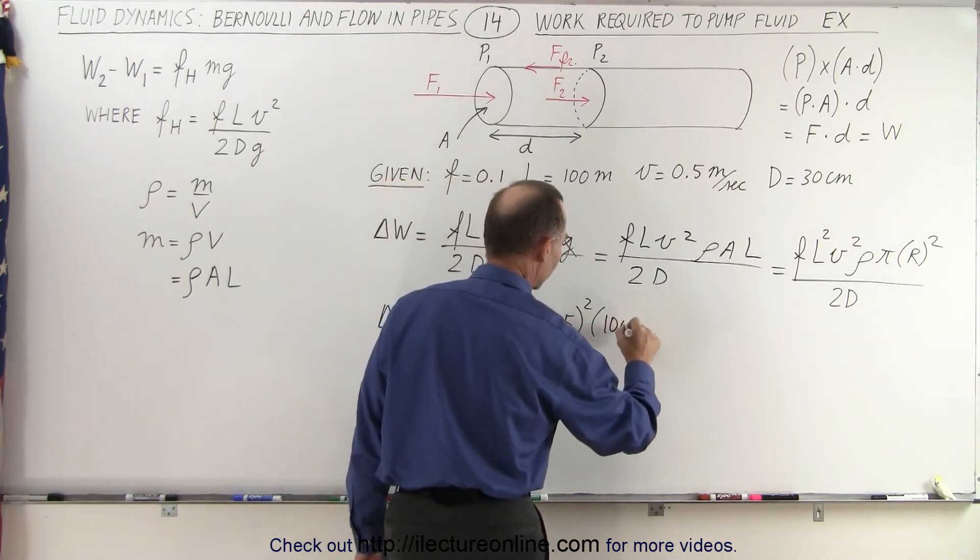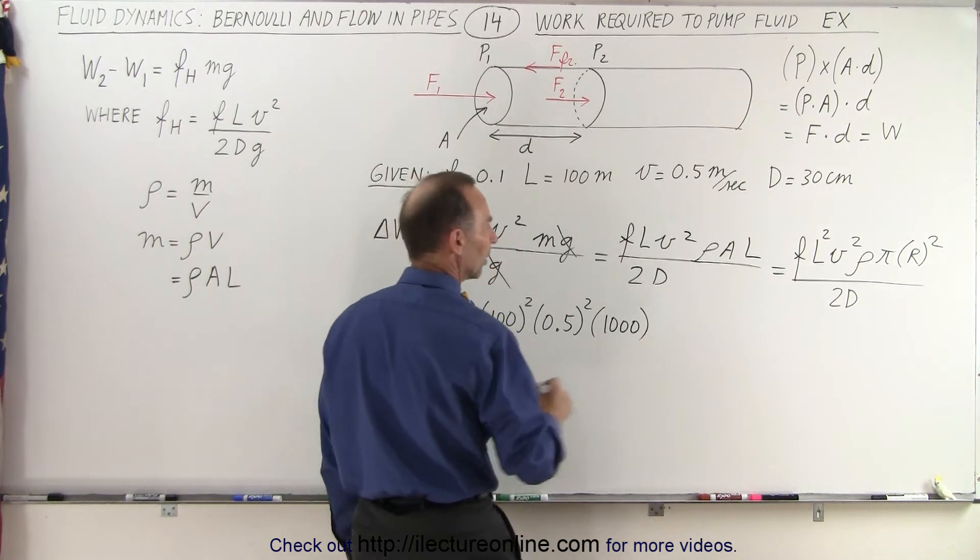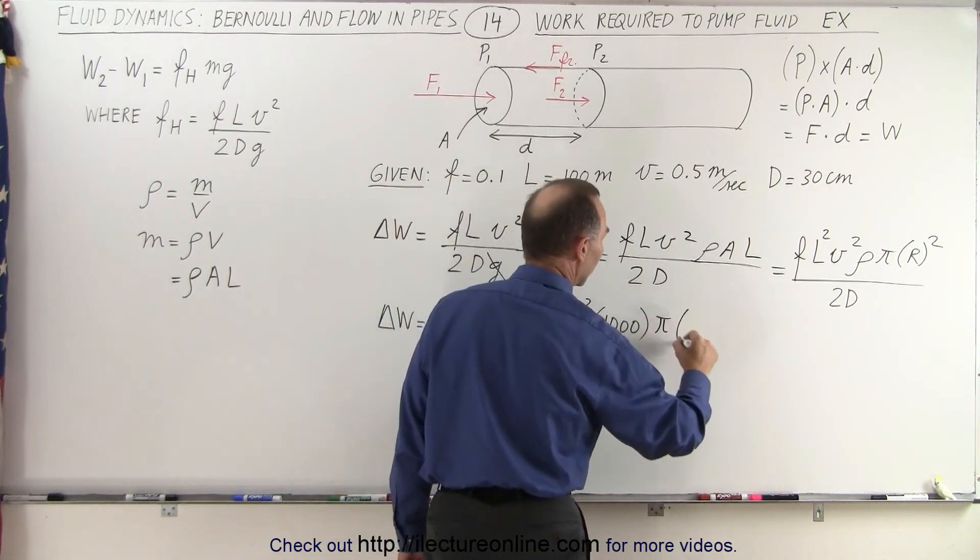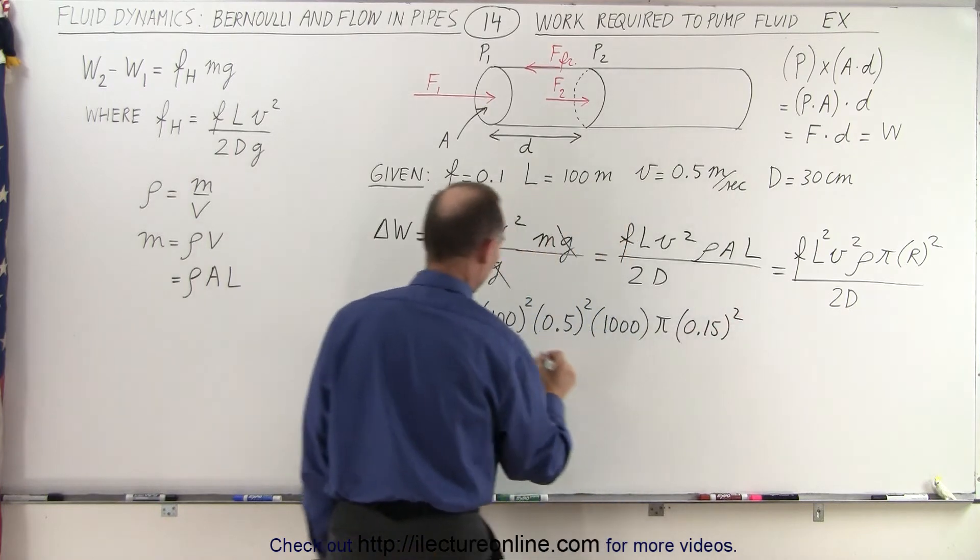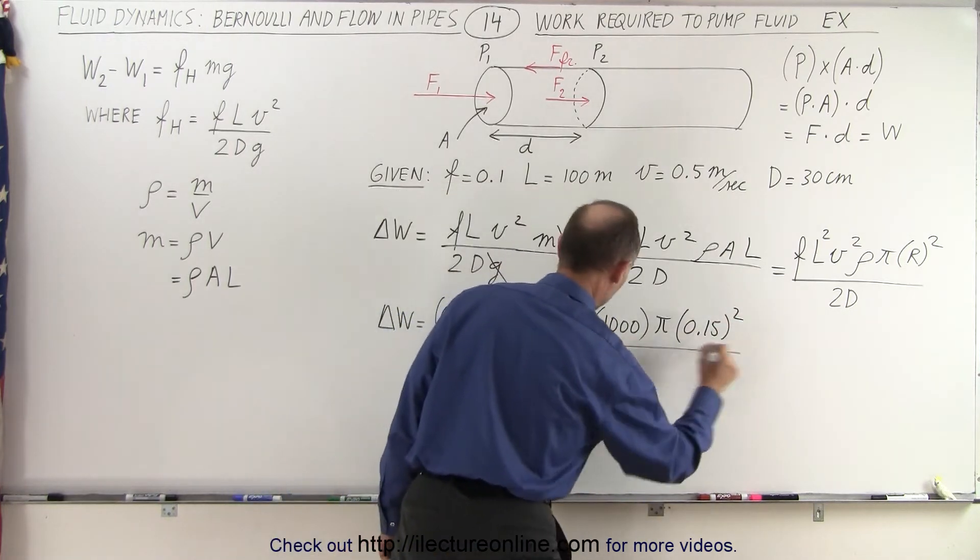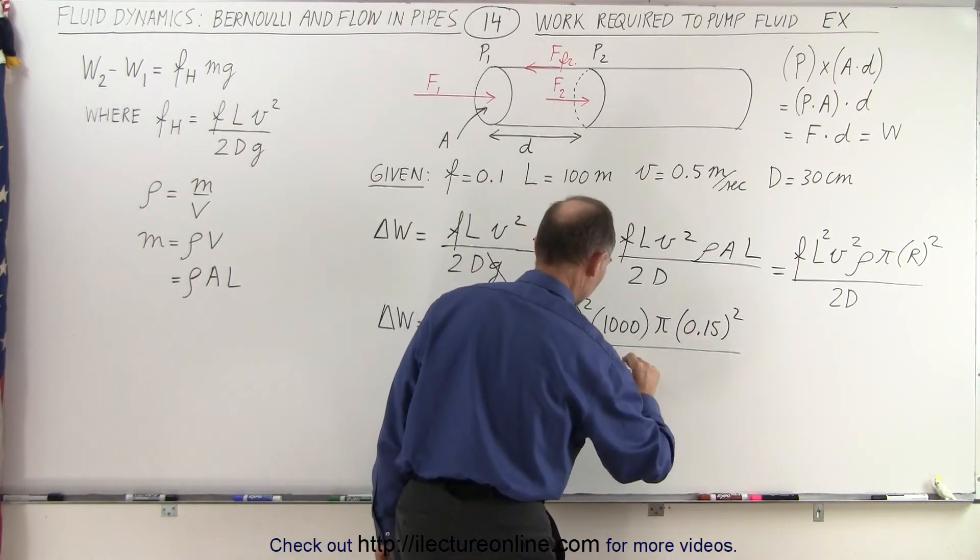the density would be 1,000 kilograms per cubic meters, then we have pi, then we have the radius 0.15 quantity squared, and all divided by twice the diameter, 2 times 0.3.